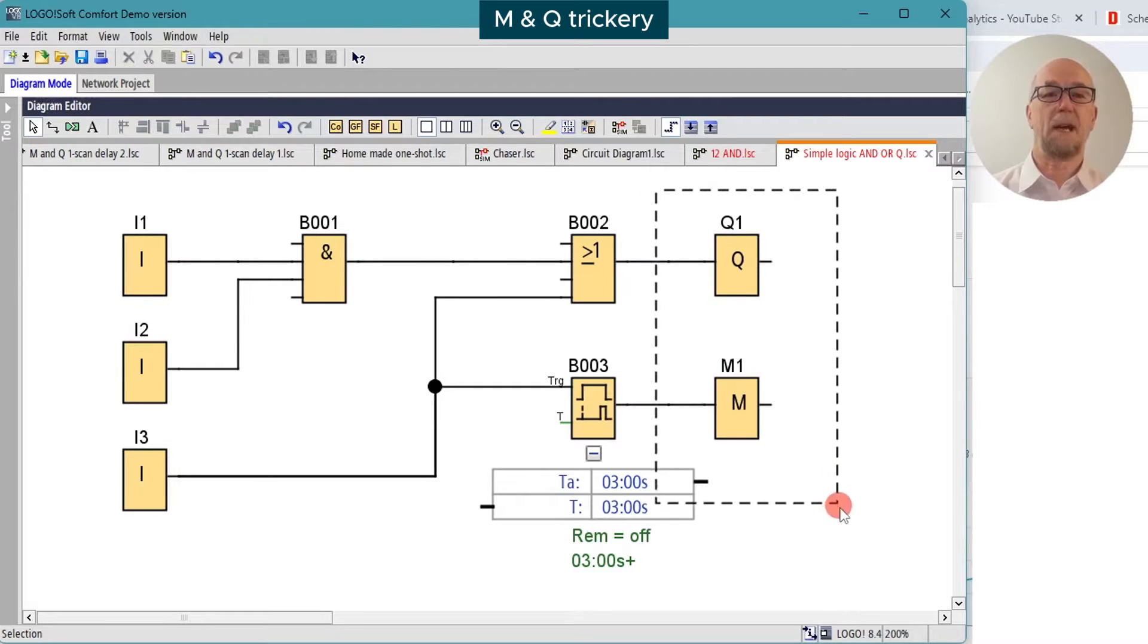The Siemens Logo flags and outputs M and Q behave in a way that you might not expect. In this quick tutorial, we'll have a look at how they behave, why they behave that way, and why this behavior can be useful.